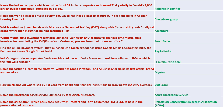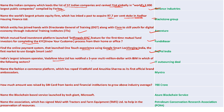Reliance Industries leads a list of 57 Indian companies and is ranked 71st globally in the World's 2000 Largest Companies compiled by Forbes. Blackstone Group is acquiring 97.7% stake in Aadhaar Housing Finance Limited. A Century joined hands with the Director General of Training and Cisco to skill youth for the digital economy through Industrial Training Institutes. Fundbazaar is the mutual fund platform that launched Selfie Wala KYC for first-time mutual fund investors. PayPal India launched a one-touch experience using Google Smart Lock.